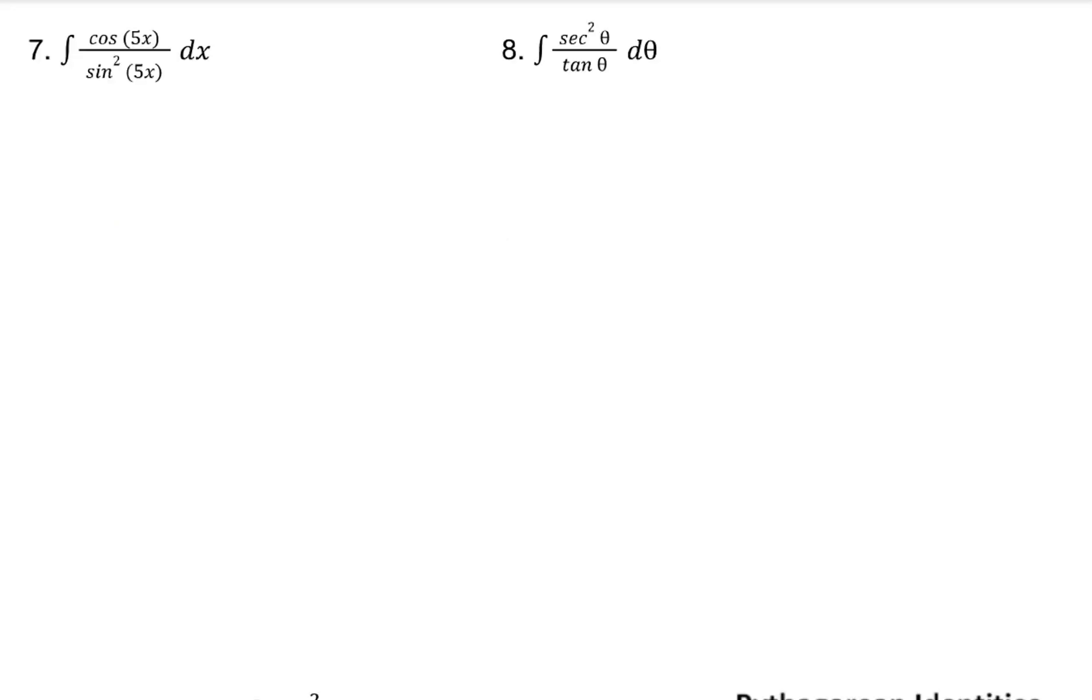Sometimes using trig identities can help you simplify the integrand in order to integrate it. Now that I've rewritten it, I can see the quotient identity would make this cotangent of 5x, and the reciprocal identity of sine is cosecant. This looks like it might be cosecant if u is 5x.